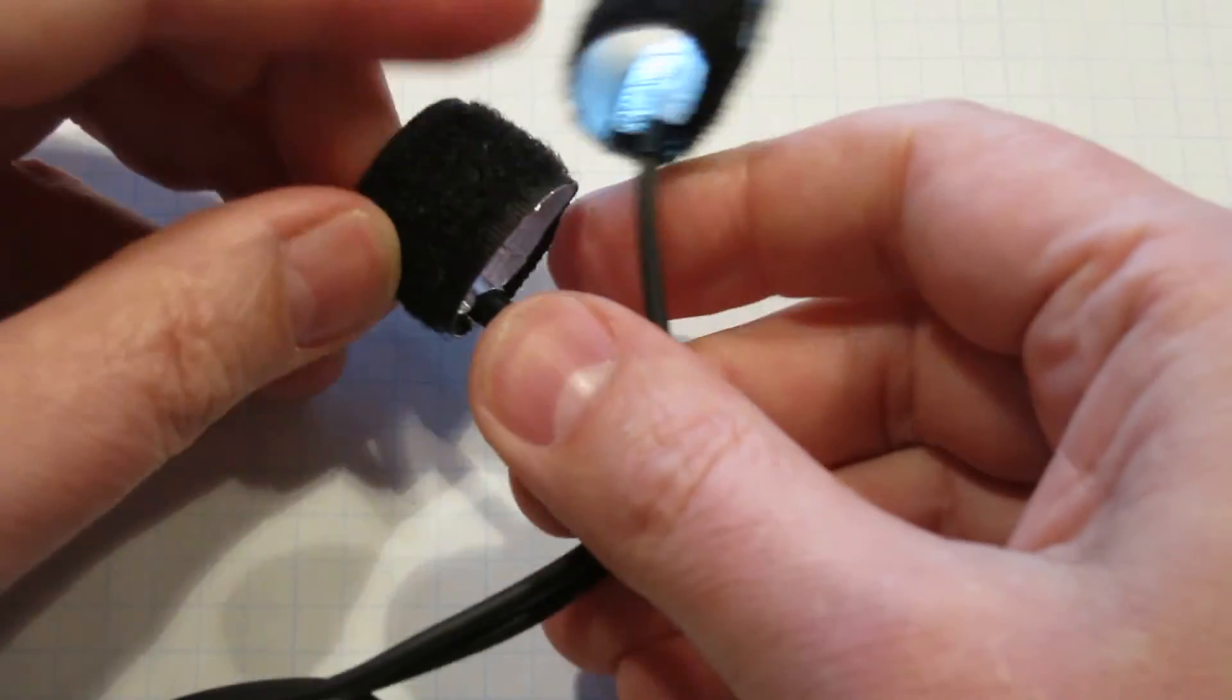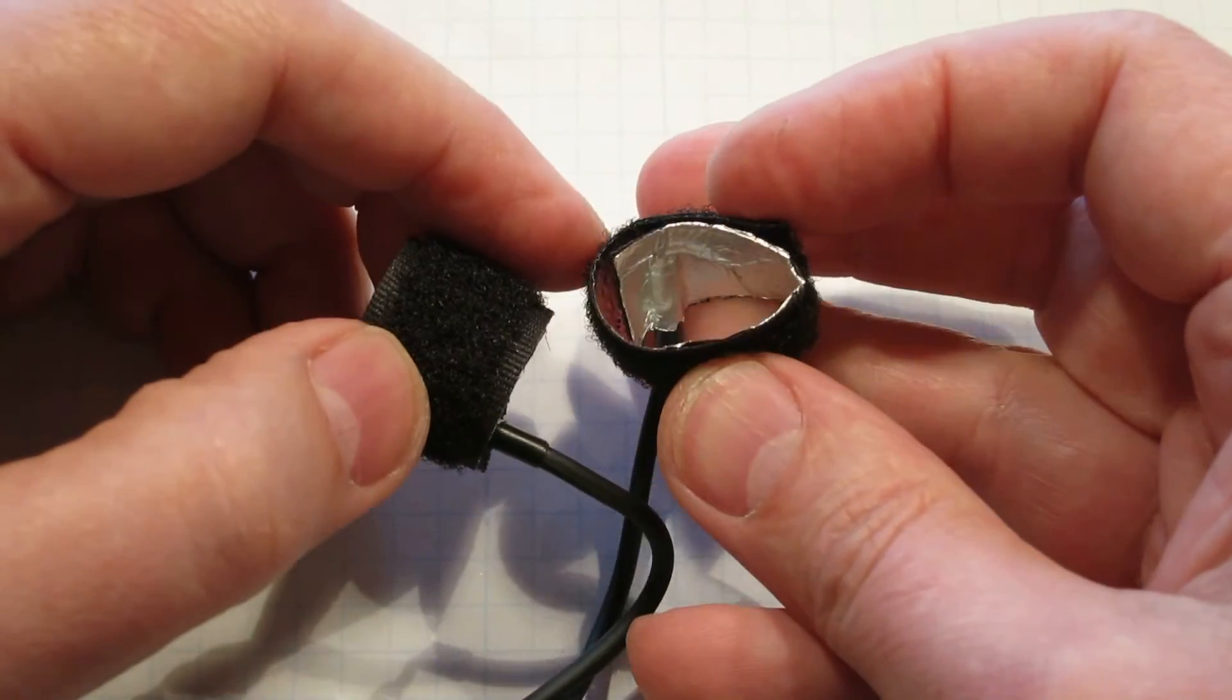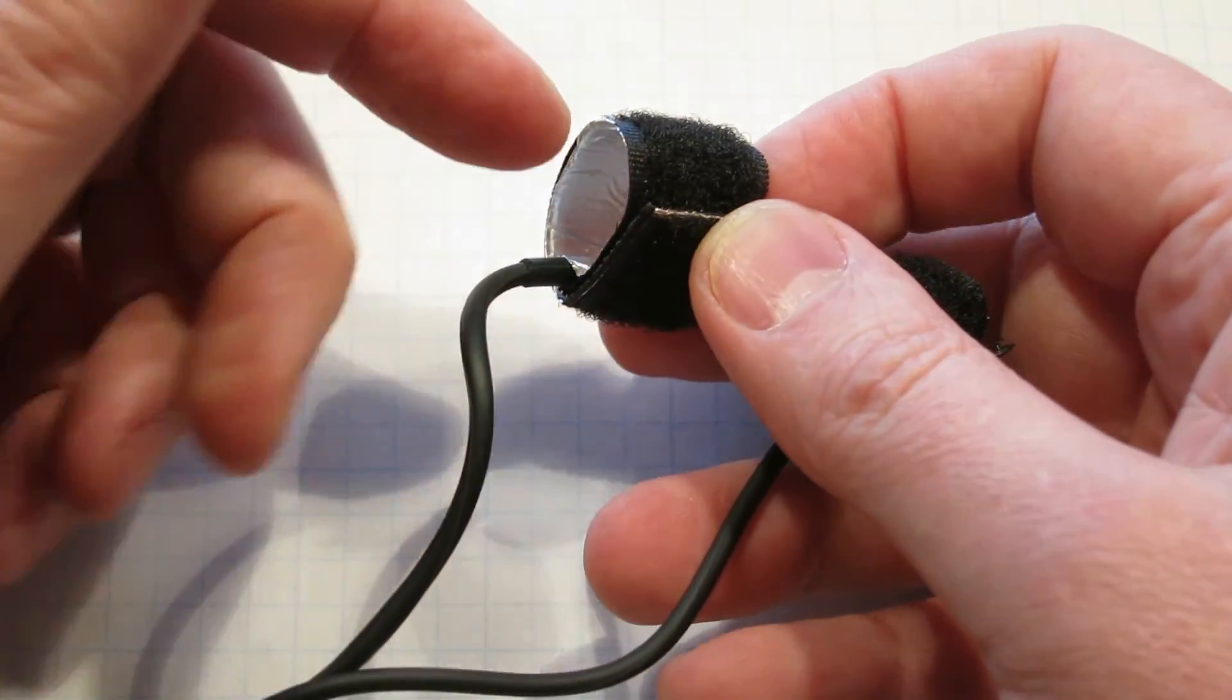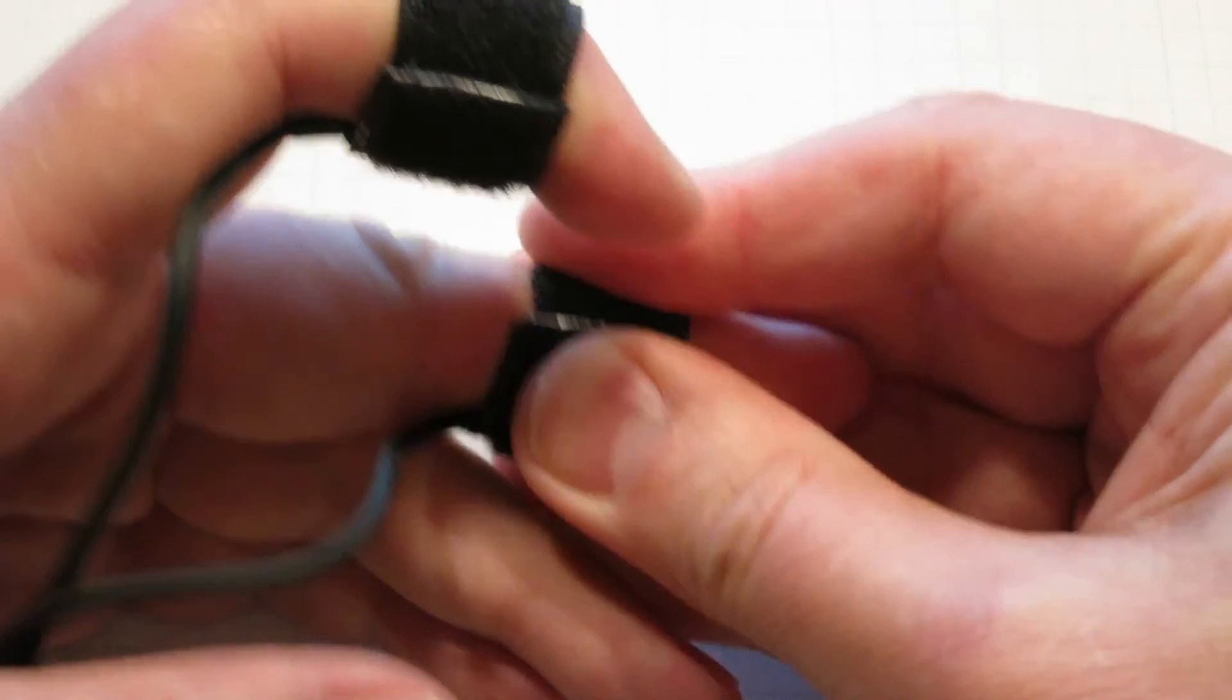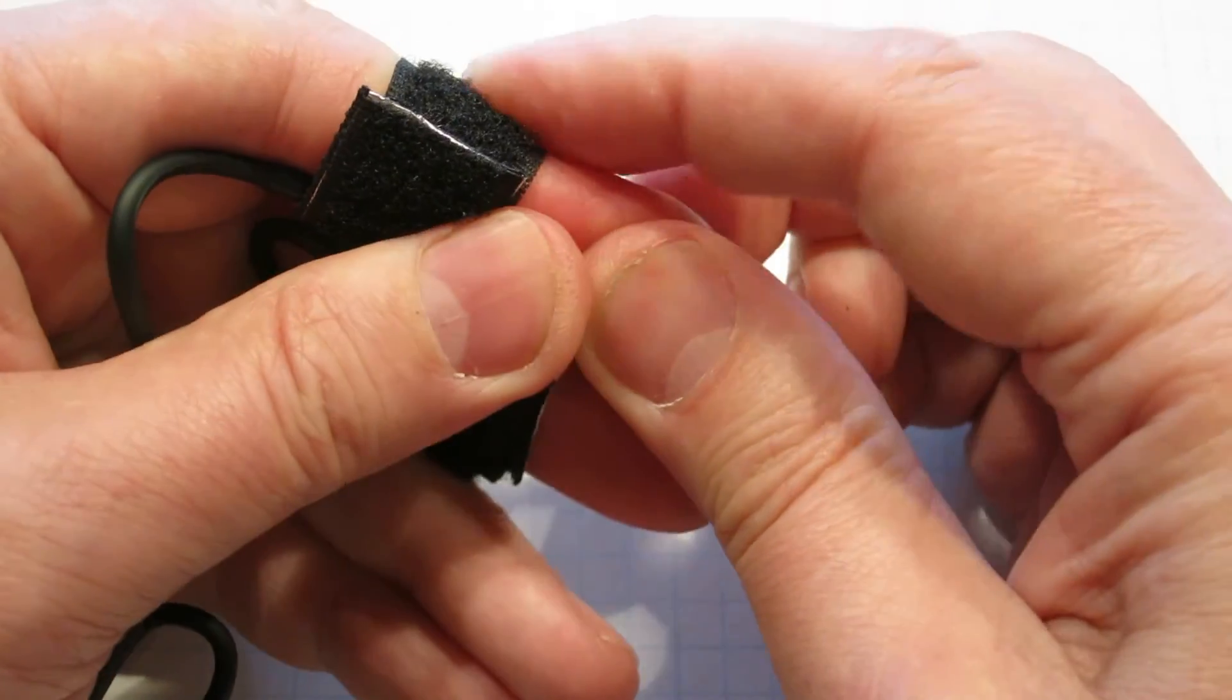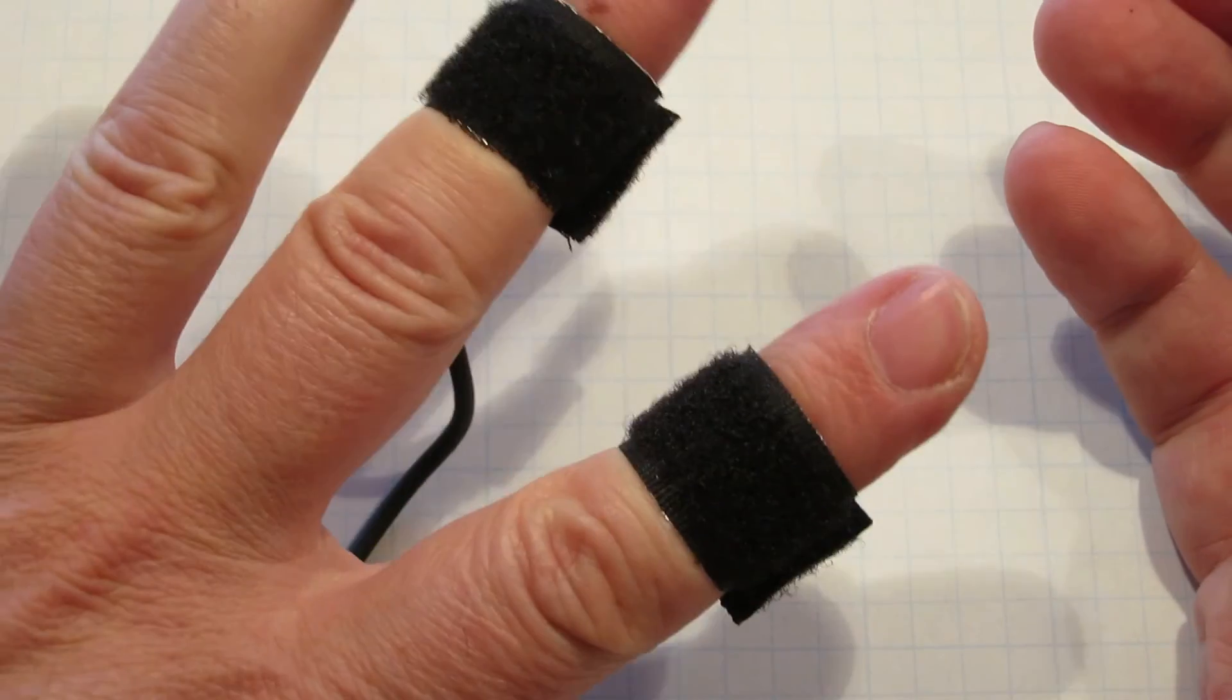The electrodes you loop to themselves with that Velcro, and you adjust them until they slide on your fingers so that they're tight, but not so tight that you're going to lose any circulation or anything like that. And there you go.